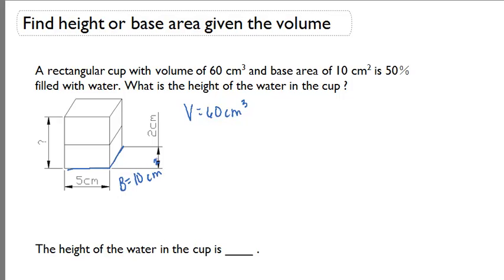And we know that this volume is 50% filled with water. We want to know what the height of the water in the cup is. So if I first figure out what 50% of 60 centimeters cubed is, I'll get 30 centimeters cubed. So that's this volume right here. That represents this volume here below this line.